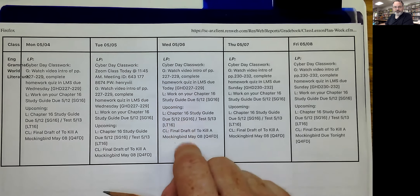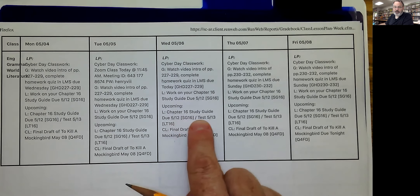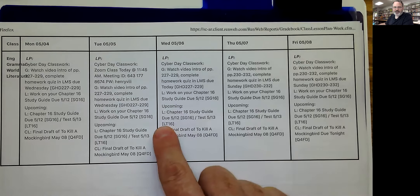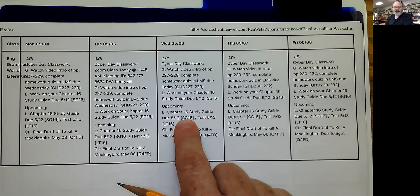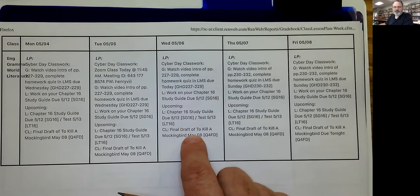The Chapter 16 study guide is due May 12th — that's Tuesday of next week — and we're going to have a test over it on the 13th, which is Wednesday of next week. Wednesday is the last day of instruction for the school year, so that'll be the last thing we do. The test is called LT16 and the study guide in LMS is called SG16. Also, this Friday your final draft of To Kill a Mockingbird is due — please get that finished and uploaded. I won't get them graded until probably the end of next week because I've got so much to do for the seniors.